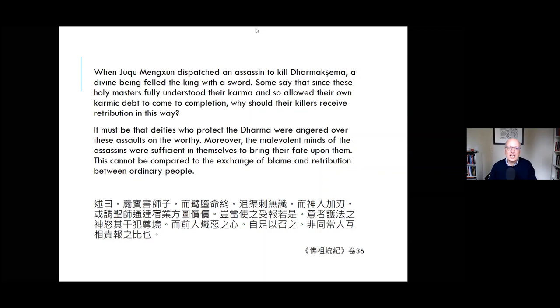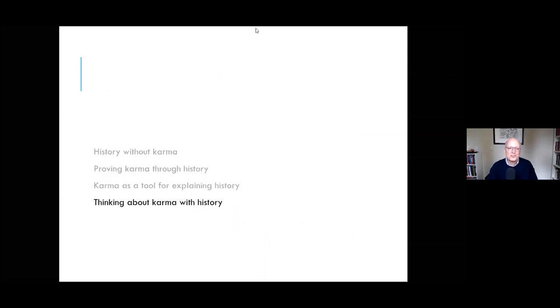This is Zhipan's response: It must be that deities who protect the dharma were angered over these assaults on the worthy. Moreover, and here's the key point, the malevolent minds of the assassins were sufficient in themselves to bring their fate upon them. This cannot be compared to the exchange of blame and retribution between ordinary people. In other words, the agent of Dharmakshema's murder, whether it be the king or a spirit, was responsible for their own actions, regardless of the state of Dharmakshema's karma, and so would in turn carry the burden of the karmic consequences of their act. None of us, he seems to be saying, are automatons. The king, even if his actions played a role in balancing out the karmic debt of the monk he has murdered, was still responsible for what he did.